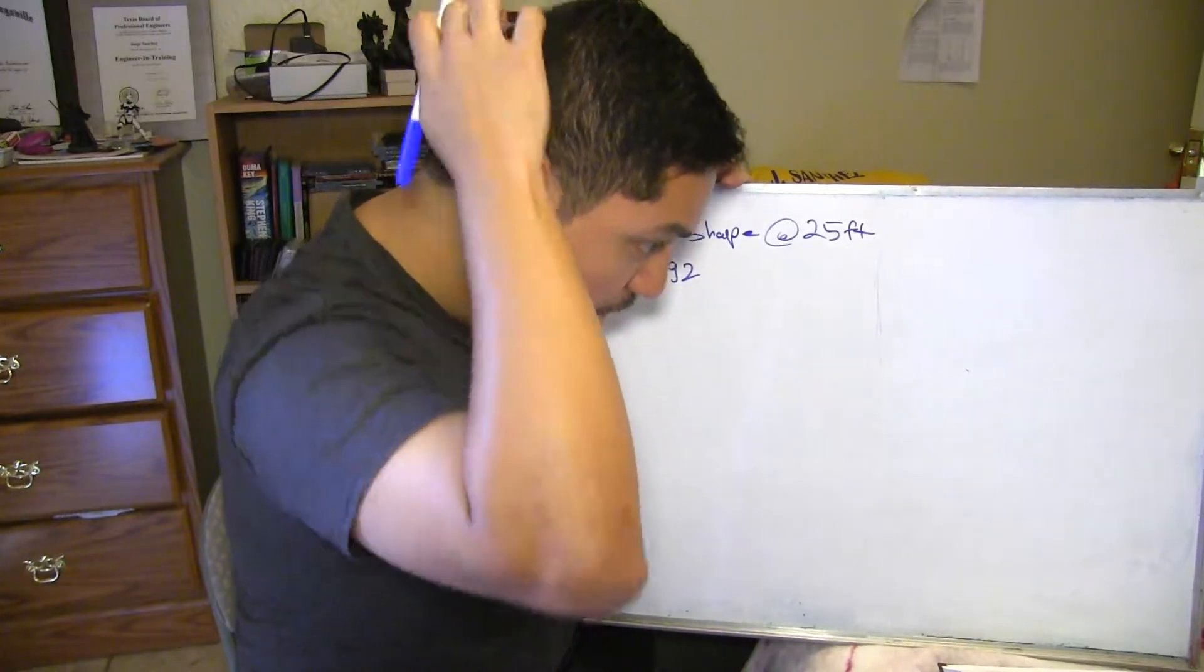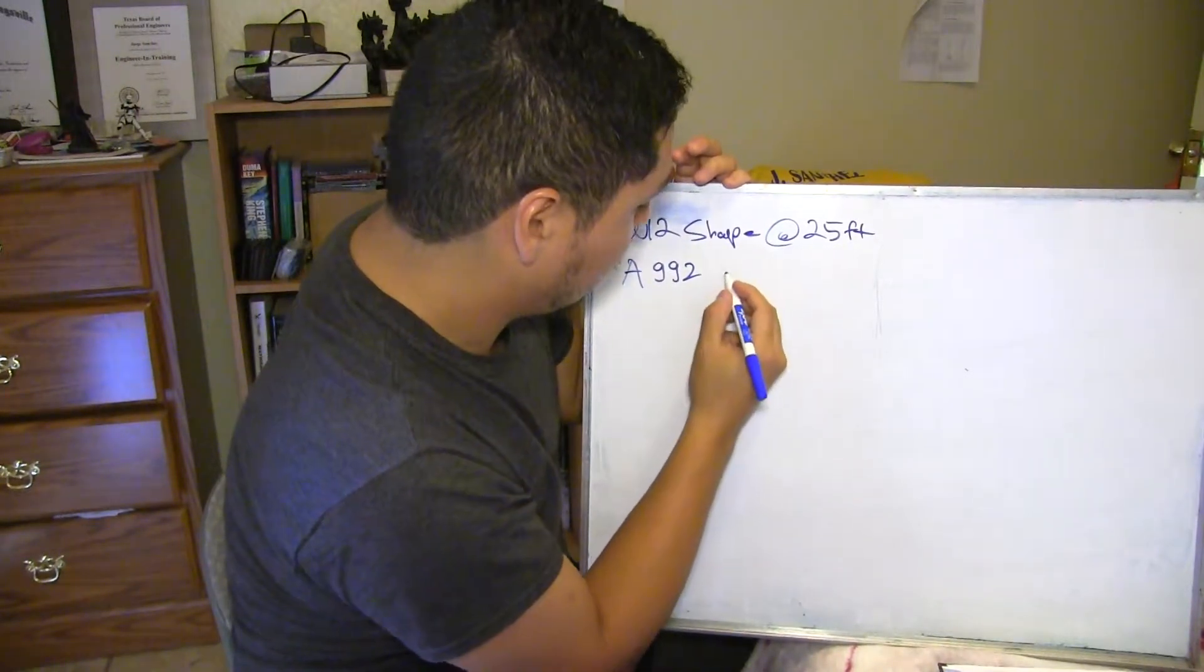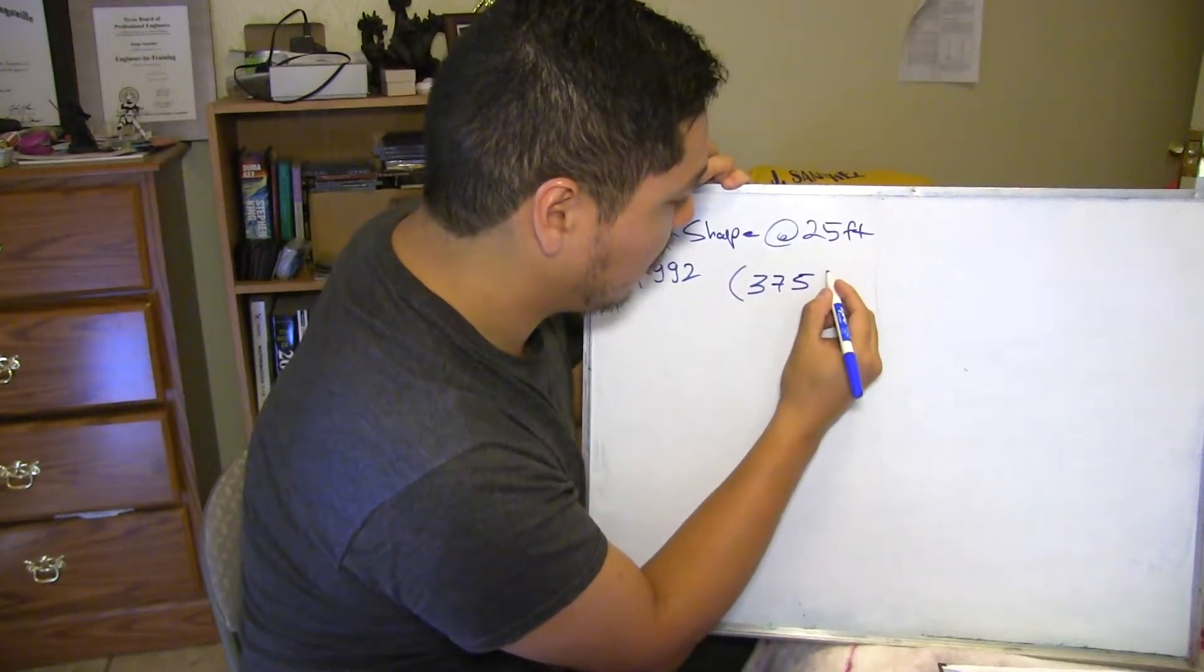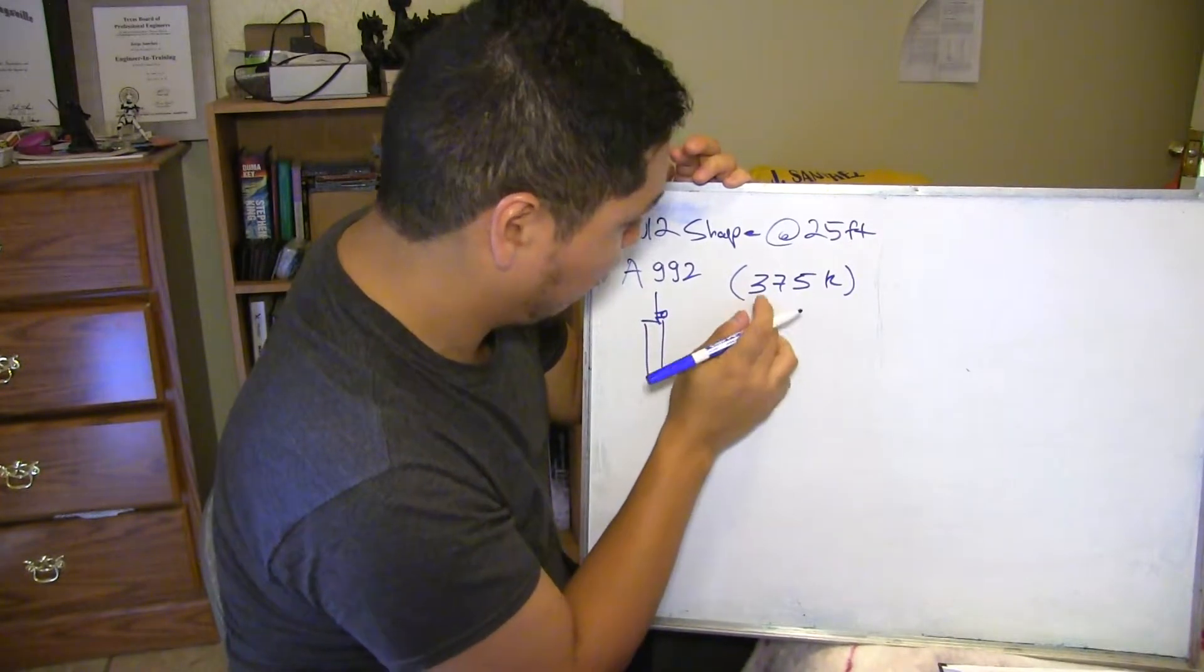So I think that's grade 50. And this column is going to be supporting a live load of 375 kips. So it's going to be like this, taking this load.